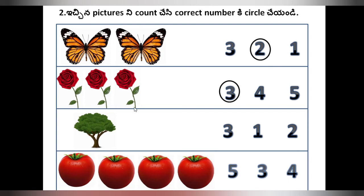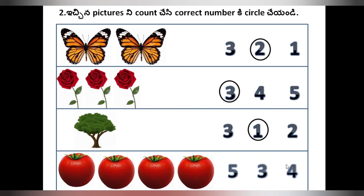Next, how many trees are there? There is only one tree. So we have to circle 1. Next, how many tomatoes are there? 1, 2, 3, 4. So we have to circle the number 4. Like this, we have to circle the correct number.